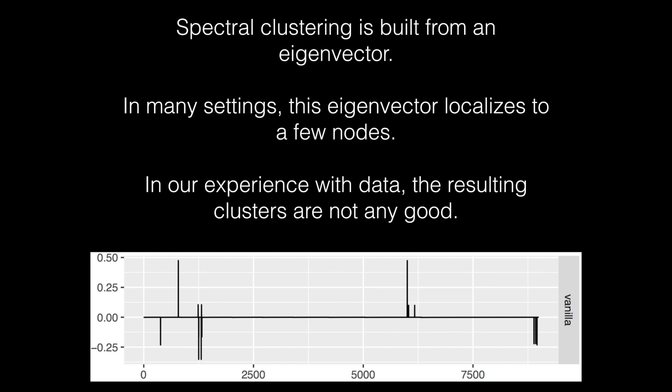However, in practice, it always finds small communities with just a few nodes because the eigenvectors localize to just a few nodes.